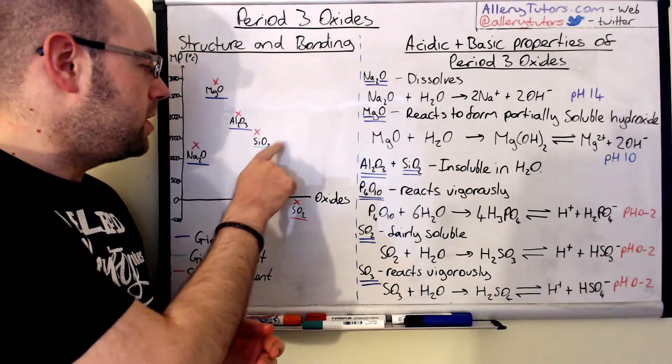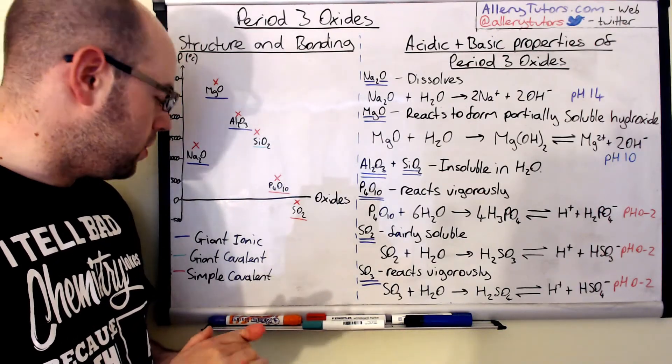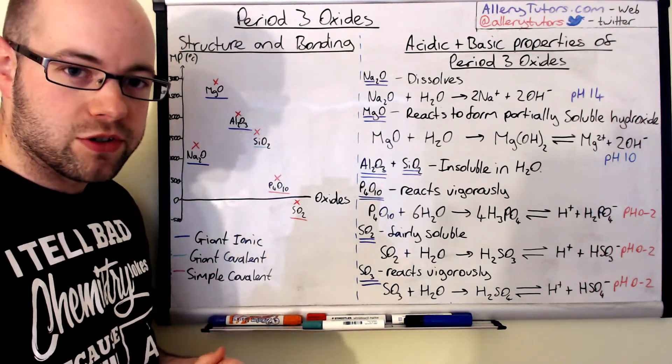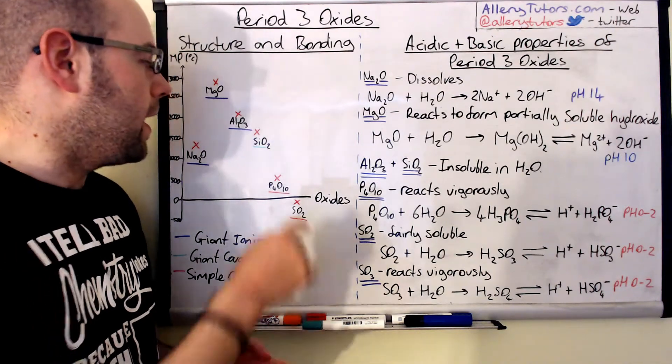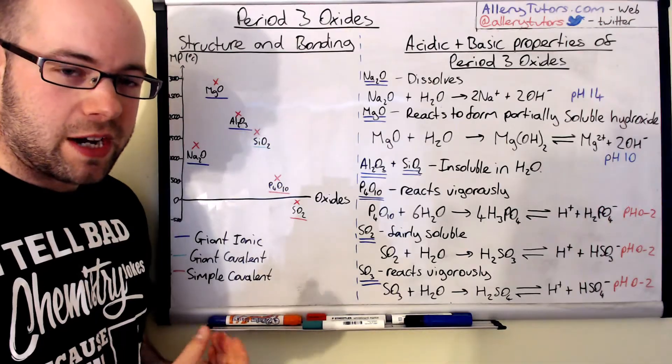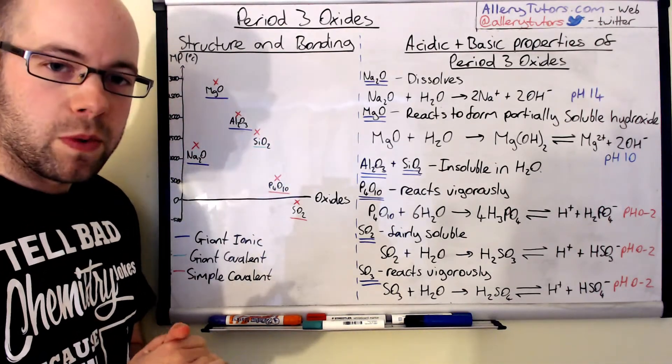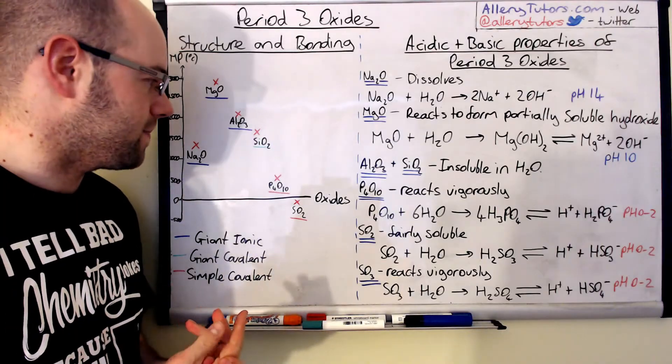So if we go on to the next one, silicon dioxide, this is the first and only one which is a giant covalent structure in period 3. So this is a bit like a similar structure to diamond, very large and again quite a high melting point of just over one and a half thousand degrees Celsius.